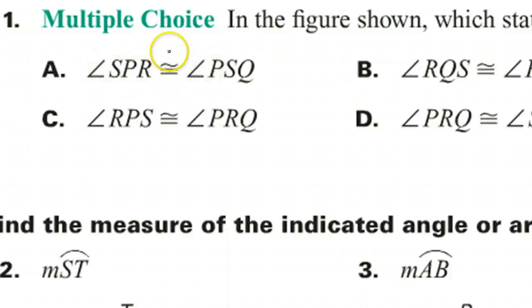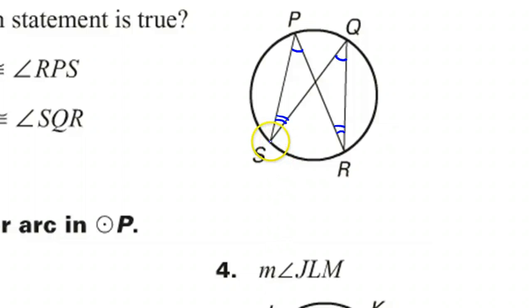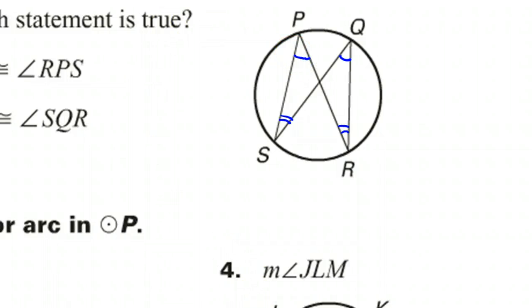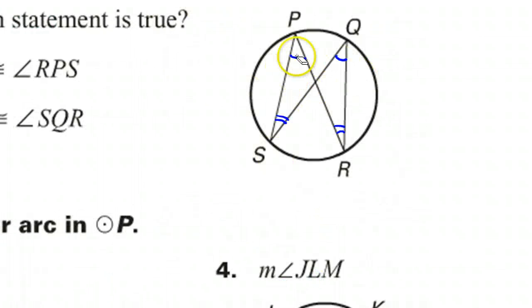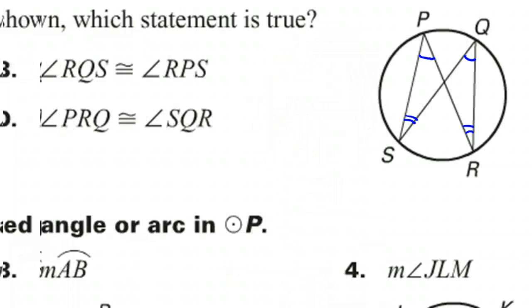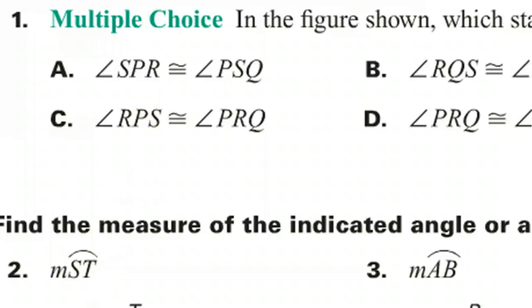Now, in this problem, we're using the three-letter designation. So when I talk about angle SPR, I'm saying this. Angle S, P, R. So I'm really talking about this angle, the angle at P. So really what you want to do is focus your eyes on the middle angle. So we're trying to decide which statement is true. So you see how it's supposed to be. P and Q, S and R. So look at the middle angle.